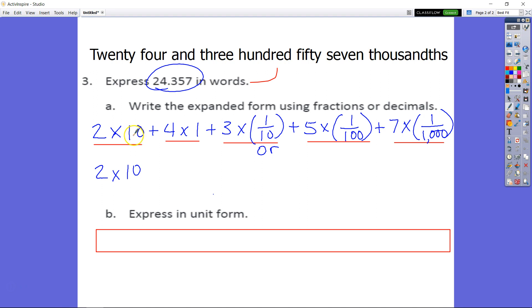Since our number here is a whole number, it's going to stay the same. We still have 2 tens, we still have 4 ones. So it's going to be 2 times 10 plus 4 times 1, plus 3 times...